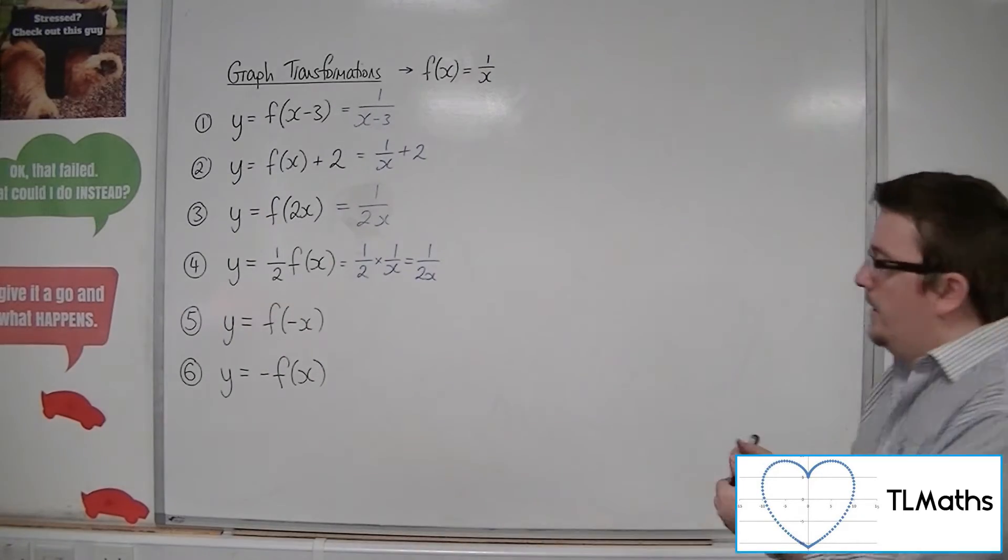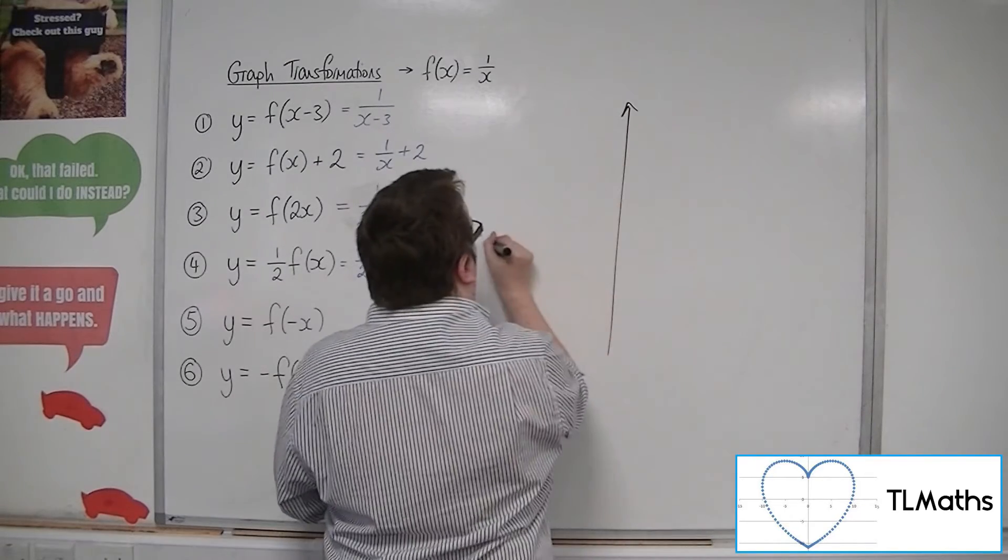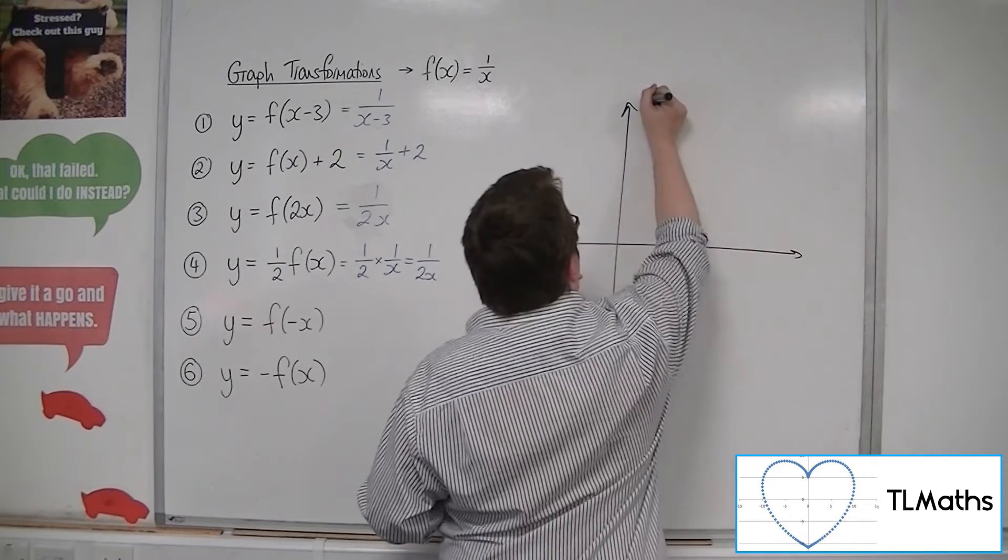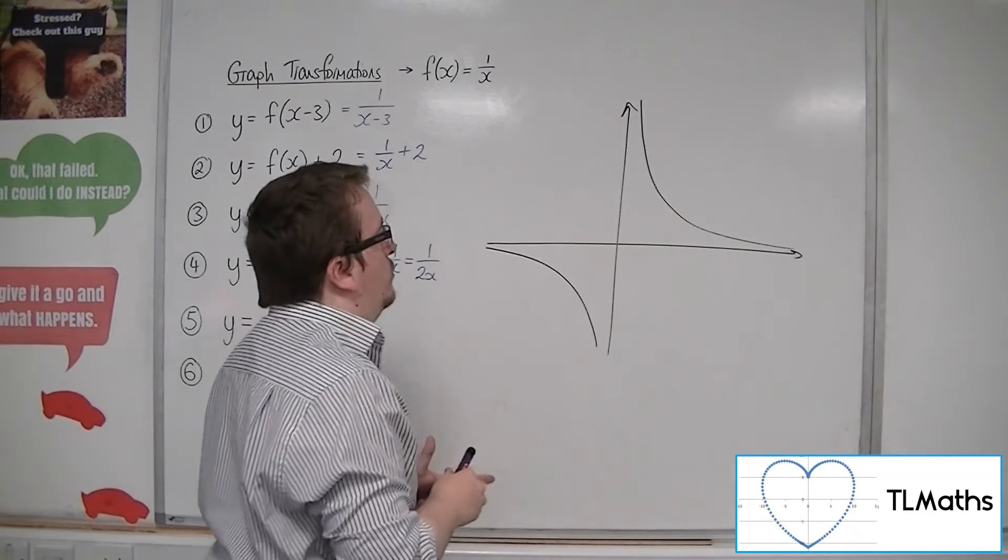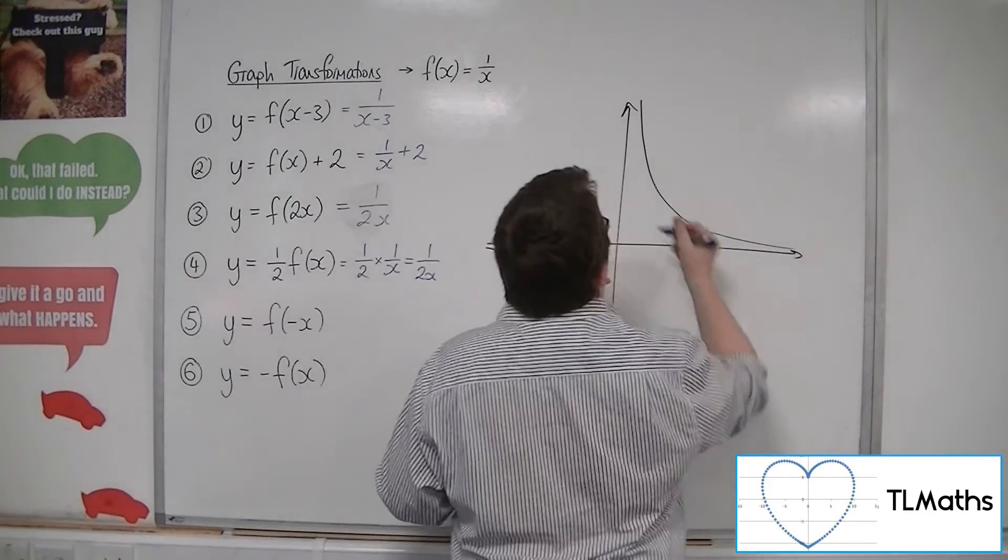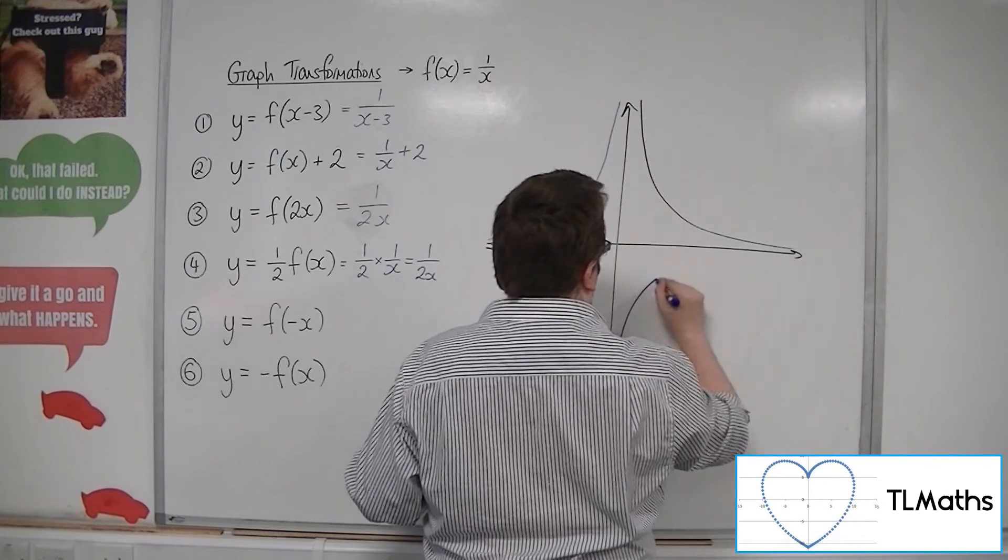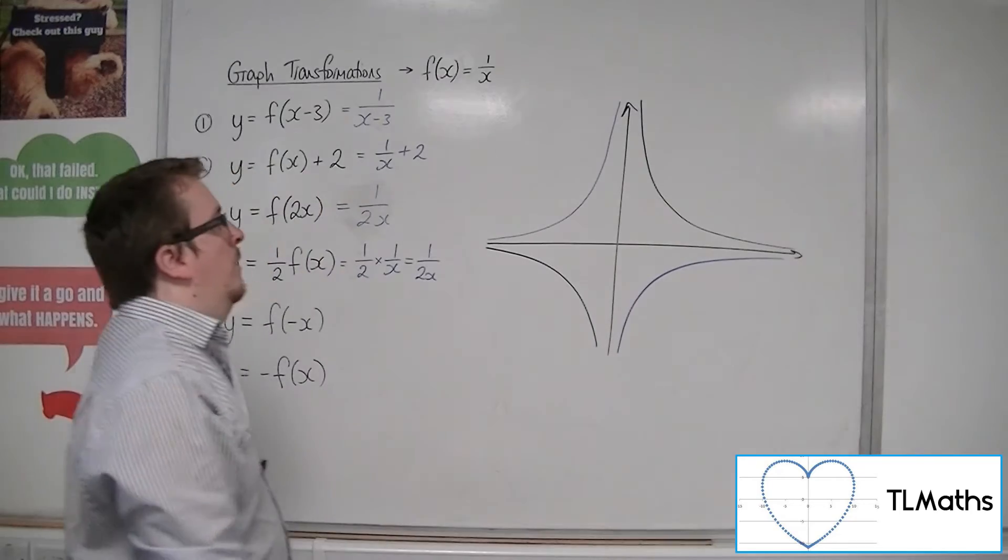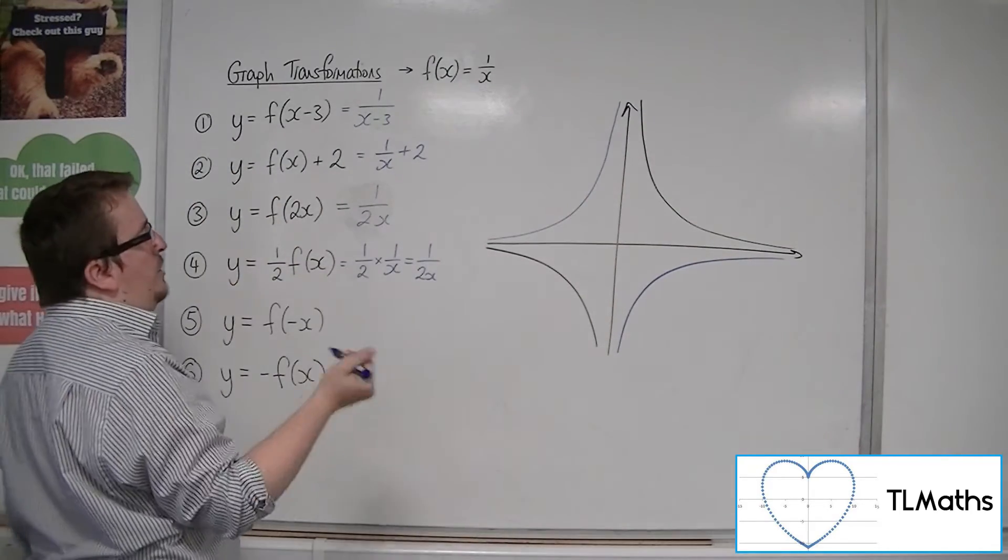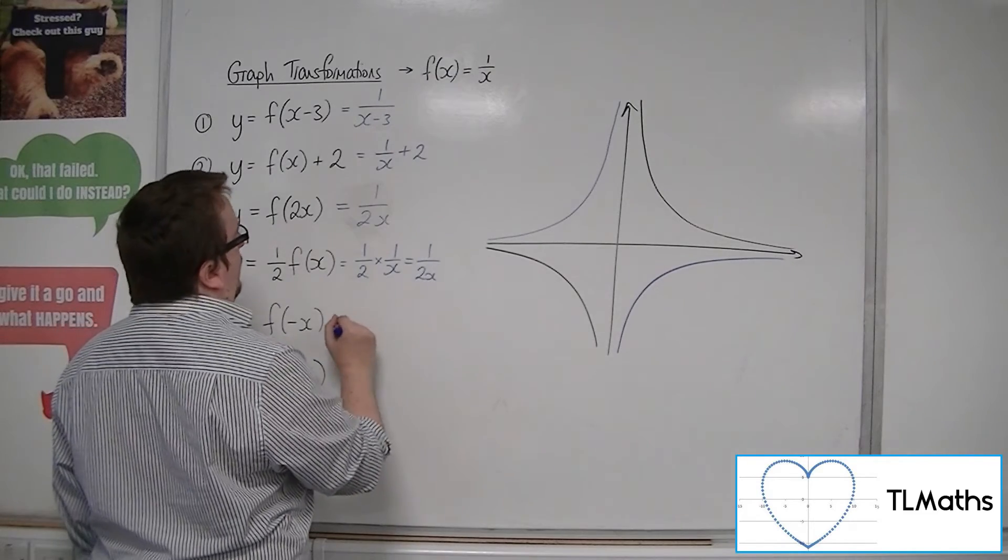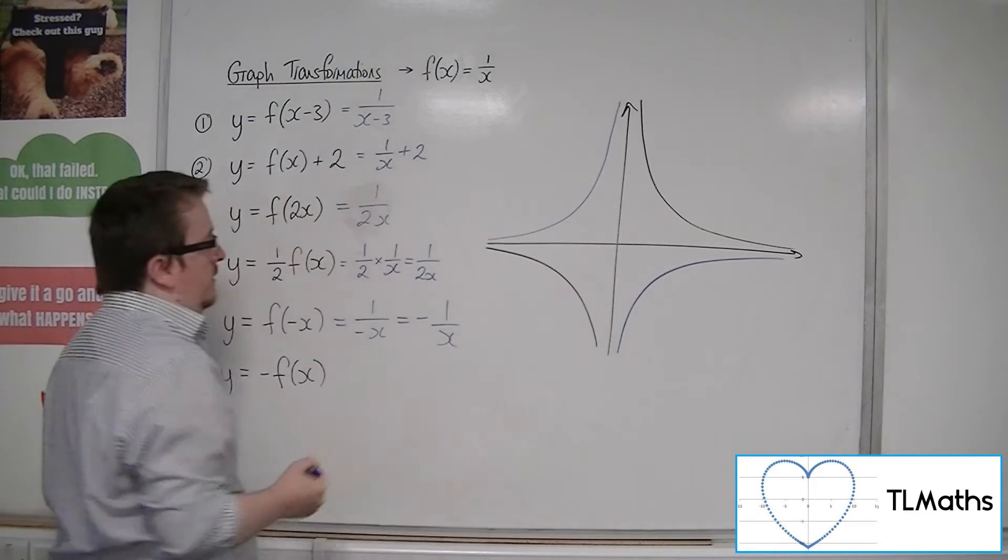Now, number 5, y equals f of minus x, is a reflection in the y-axis. So, the blue curve, so this piece and this piece, will be your new curve for this. So, you've got 1 over minus x, so minus 1 over x. Both the same thing.